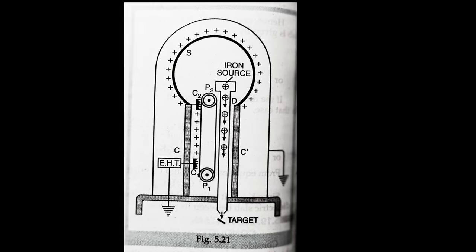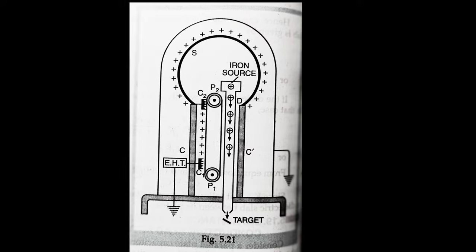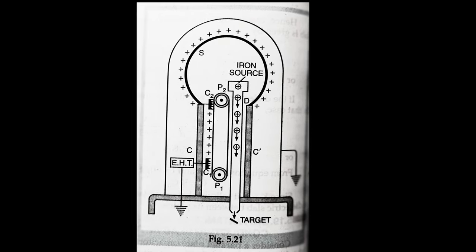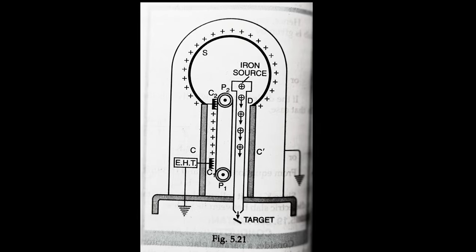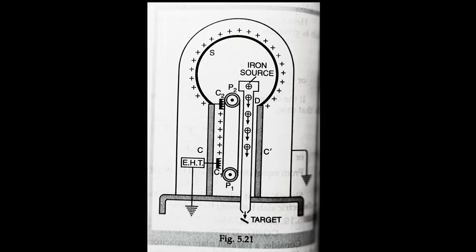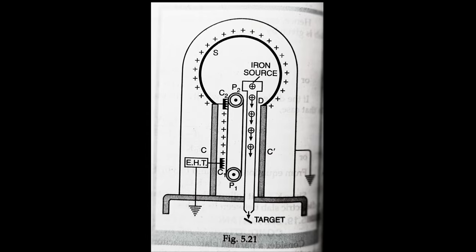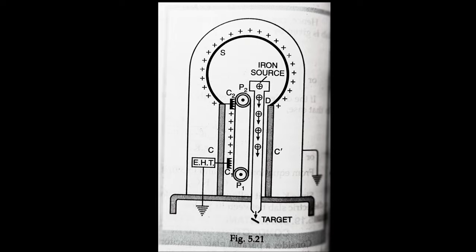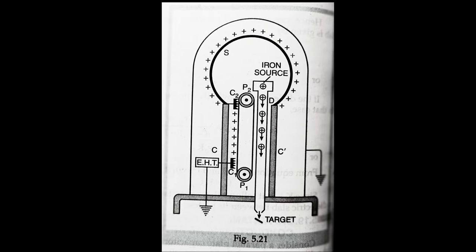The comb C2 collects the positive ions and transfers them to the metallic sphere. The charge transferred immediately moves to the outer surface of the hollow sphere. As the belt continues moving, the accumulation of positive charge on the sphere takes place continuously and its potential rises considerably.